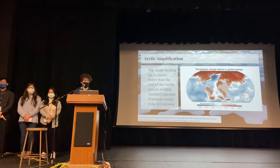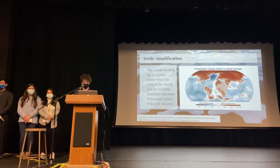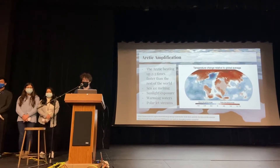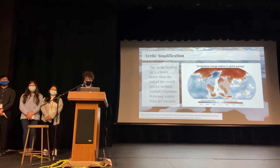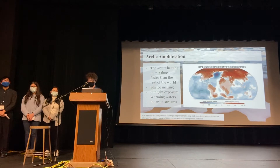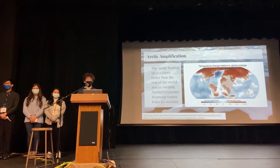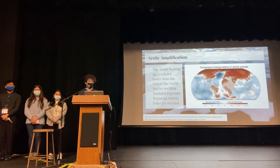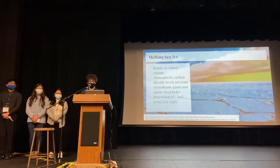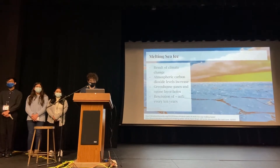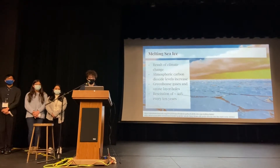A problem for Alaska and the globe overall is arctic amplification. Arctic amplification is the change in the net radiation as it has a larger temperature change at the poles compared to the planetary average. This can cause sea ice to melt due to factors such as sunlight exposure, warming waters, and polar jet streams. Melting sea ice is a result of climate change, and the leading cause is an abundant amount of carbon dioxide in our atmosphere.